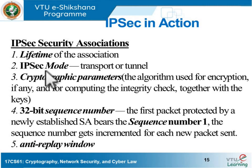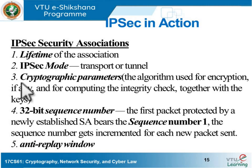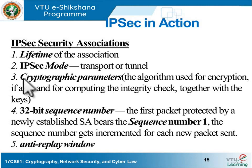The second field in a security association is the IPsec mode — whether we are using transport mode or tunnel mode. The third field is the cryptographic parameters, which specify the algorithm used for encryption or integrity checking, and the keys used for encryption or integrity checking.